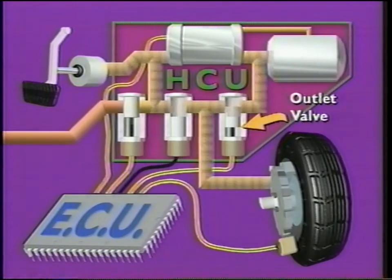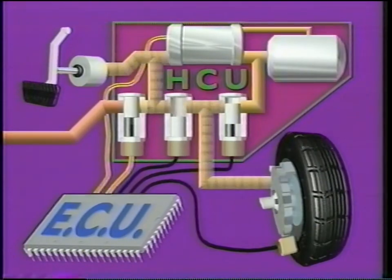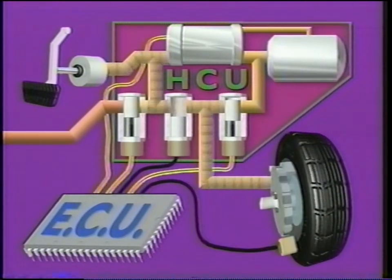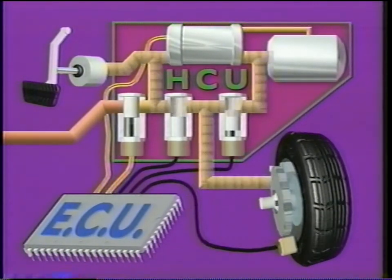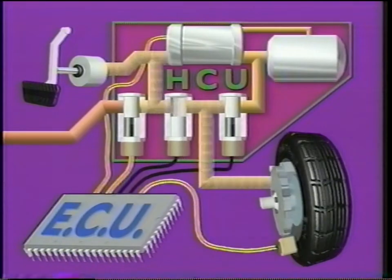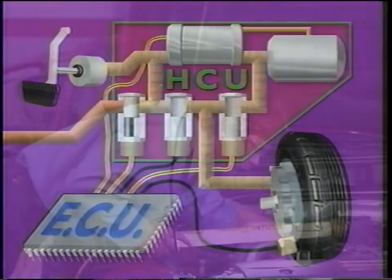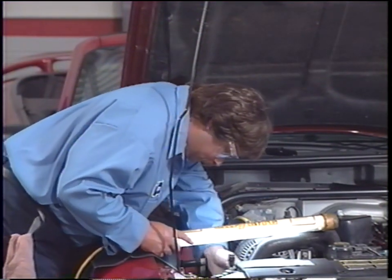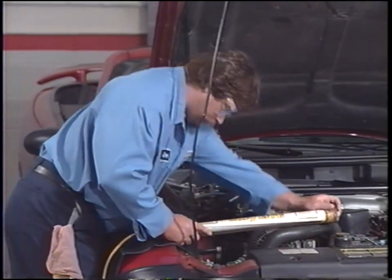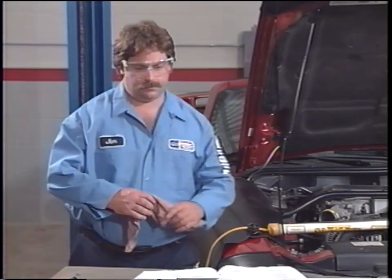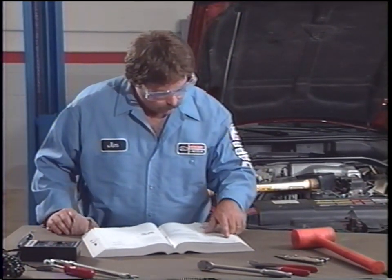As this occurs, the outlet valve modulates hydraulic pressure, providing enough brake action to slow rotation of the wheels without allowing them to stop altogether. While there are differences between HCUs used on various Anti-Lock Brake Systems, generally they all operate in a similar manner. Some HCUs cannot be disassembled for service and can only be replaced as assemblies. Others have serviceable components. Always refer to the service manual for the Anti-Lock Brake System you are working on.